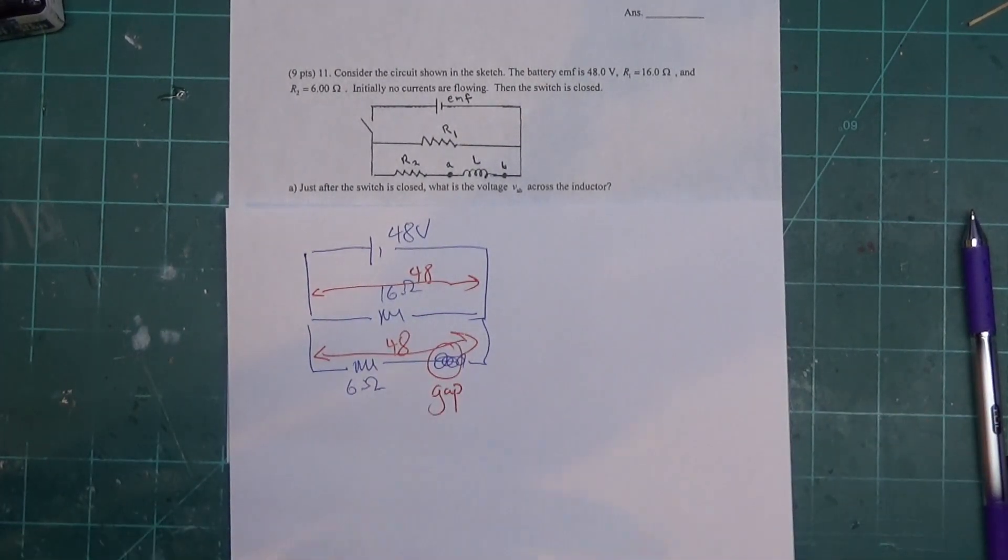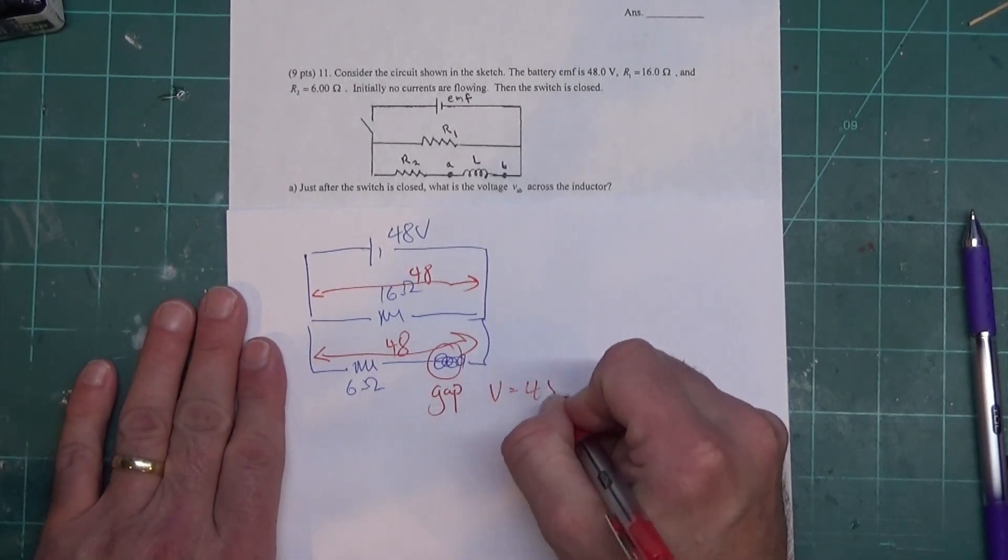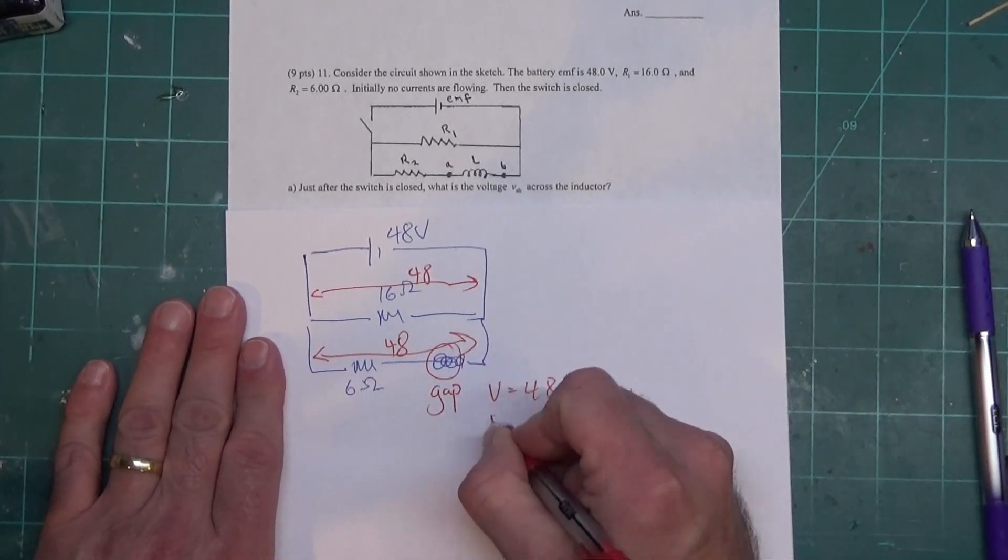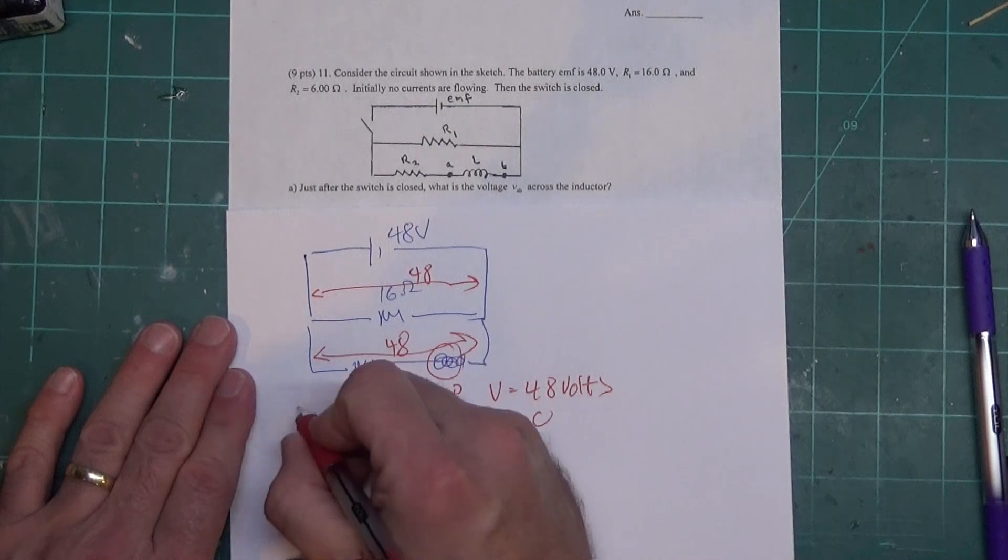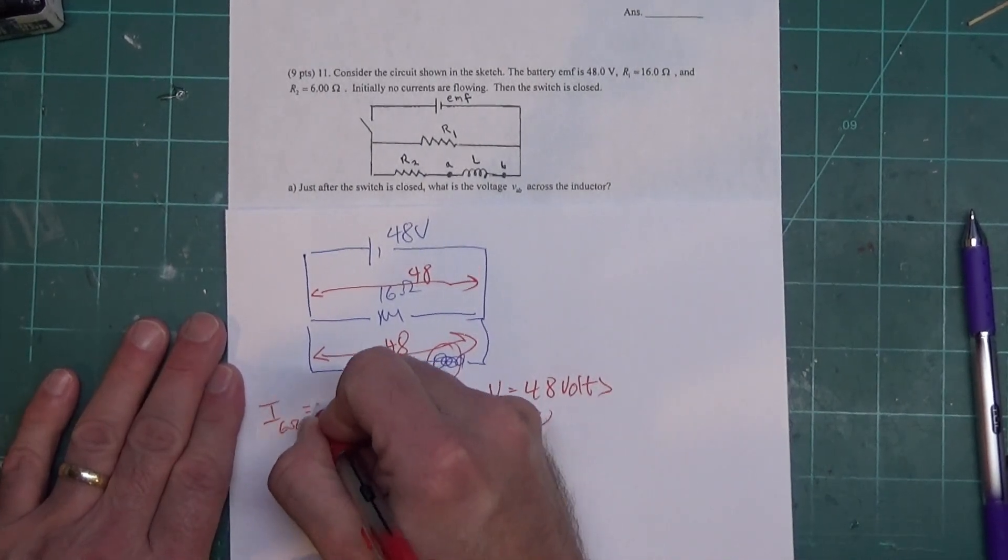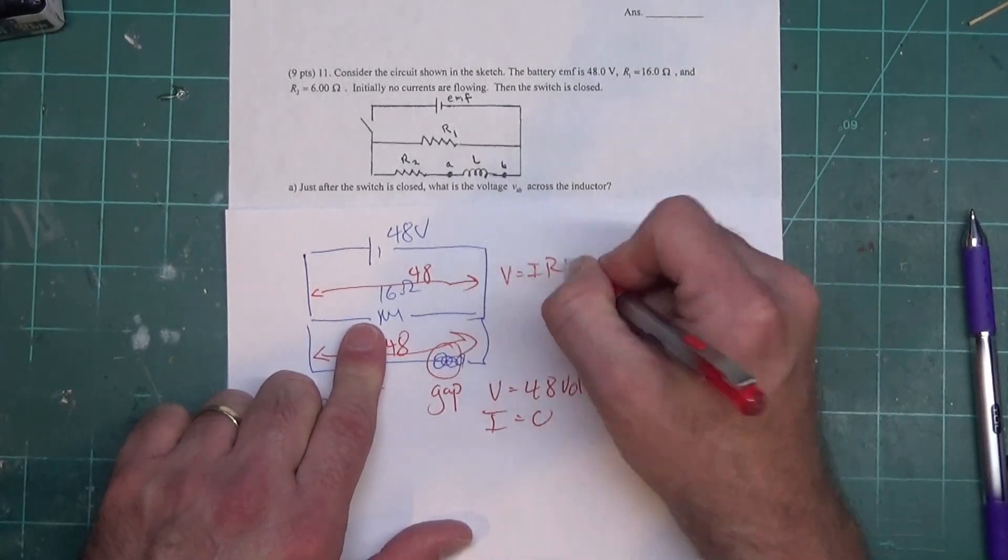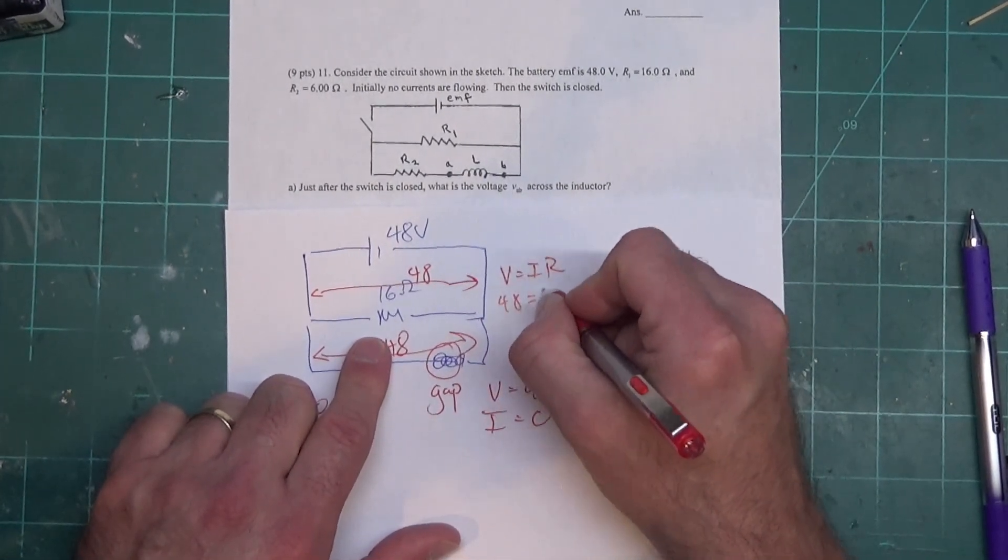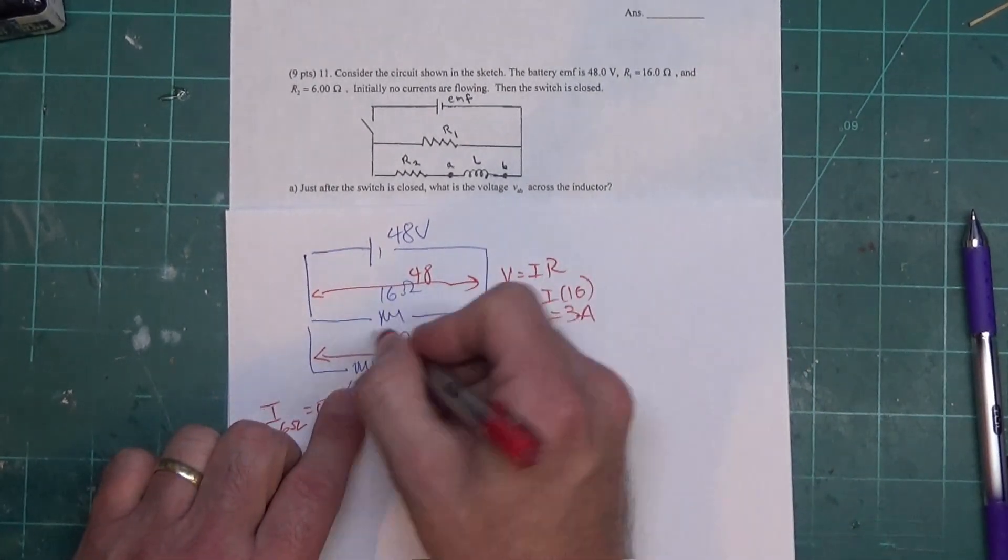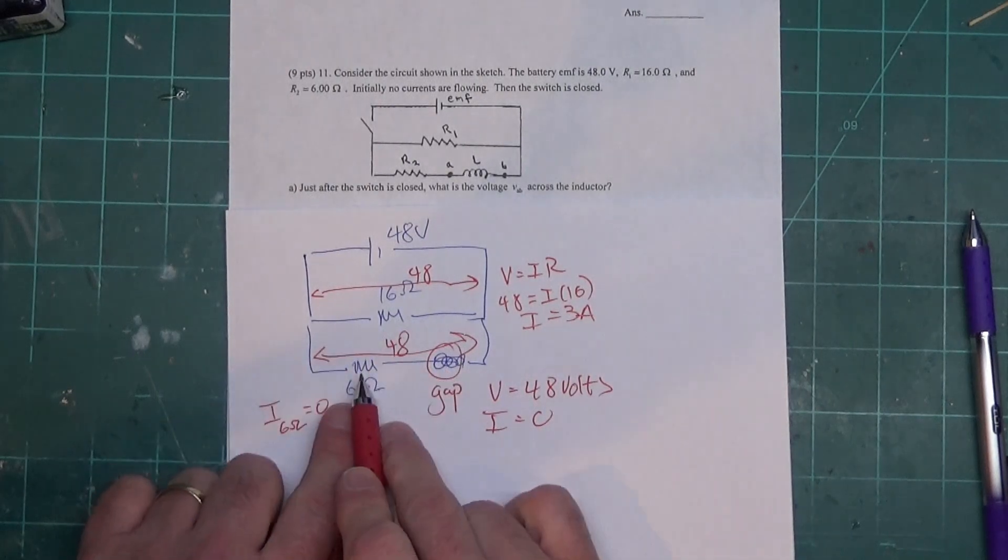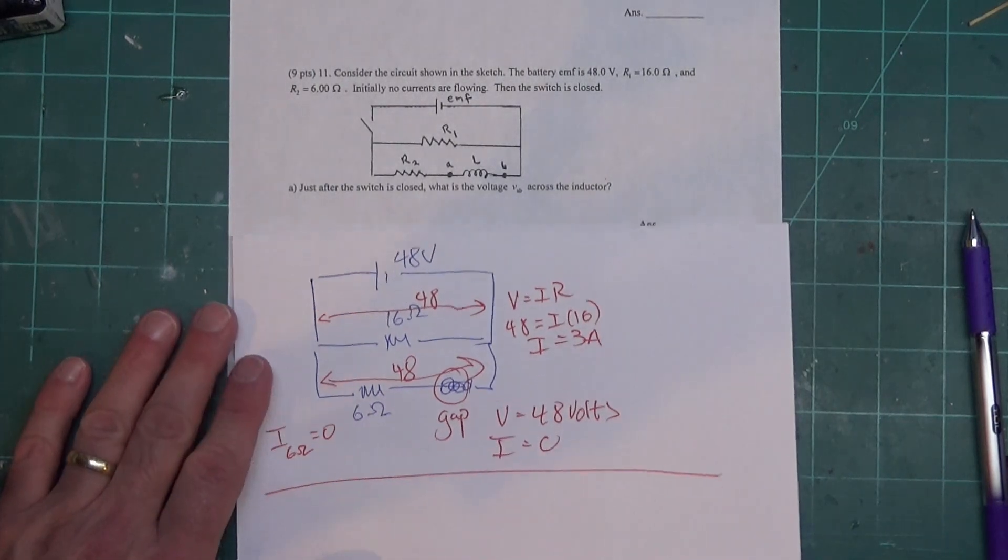It's acting like a gap but it's not actually a gap, so the inductor will have a voltage of 48 volts, but the current across the inductor will be zero. There is no current flowing through here. Just likewise, the current in the 6 ohm resistor will be zero. But up here, this will be V equals IR, and I get 48 equals I times 16, and then my current comes out to be 3 amps. So all the current's flowing through this resistor up here, none here.